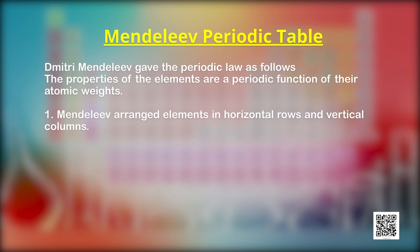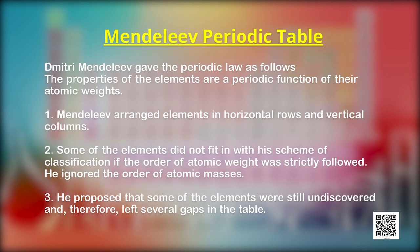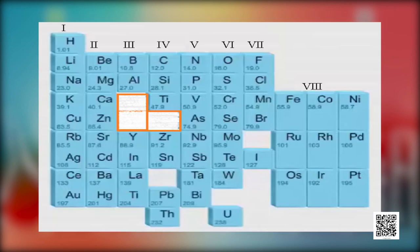Mendeleev arranged elements in horizontal rows and vertical columns in order of increasing atomic weights such that elements with similar properties occupied the same vertical column or group. Some elements did not fit his scheme, so he ignored strict atomic weight order and placed elements with similar properties together. Keeping his aim of grouping similar elements, he proposed that some elements were still undiscovered and left several gaps in the table. These elements were later discovered, showing that atomic number is a more fundamental property than atomic mass, so Mendeleev's periodic law was accordingly modified.